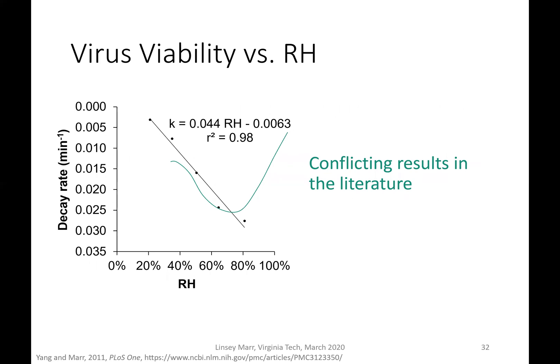The decay rate of flu virus varied with relative humidity — that was the black line shown earlier. But many studies in the literature show more of a U-shape, where there's more decay in the intermediate humidity region, maybe between 40 and 80% relative humidity, and better survival at dry conditions below 40% and at very humid conditions. We've noticed these shapes depend a lot on the composition of the liquid carrying the virus. The monotonic relationship was observed in liquids containing salt only, while we see more of the U-shape in liquids containing both salt and protein, which is more realistic.